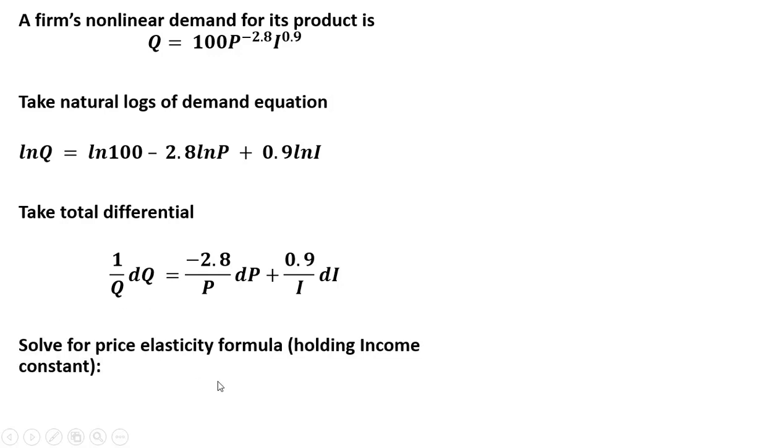Now we want to solve for the price elasticity of demand. Doing this, we're going to hold income constant, so we're going to let this DI here basically go to 0, so that's going to drop out. The price elasticity of demand formula is this. So we're going to solve for this, assuming again that DI is 0, so this whole thing's going to drop out. Income doesn't change, holding that constant.